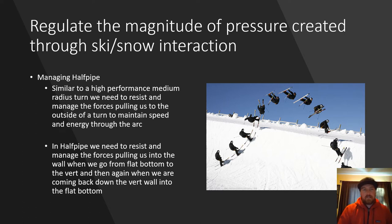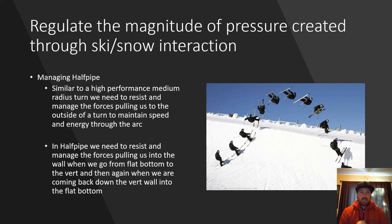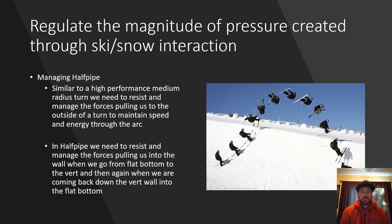Now regulating the magnitude of pressure created through ski-snow interaction — I thought this would be a good time to include half pipe. Skiing half pipe is a lot like a very high-performance medium-radius or GS-style turn. There are a lot of forces in the half pipe — the dynamic forces pulling to the outside of the turn, the bend of the ski, the radius we're setting. The same forces happen as you move through the transition zone of the half pipe, except now instead of my interaction with the snow, the actual snow surface itself is bending the ski.